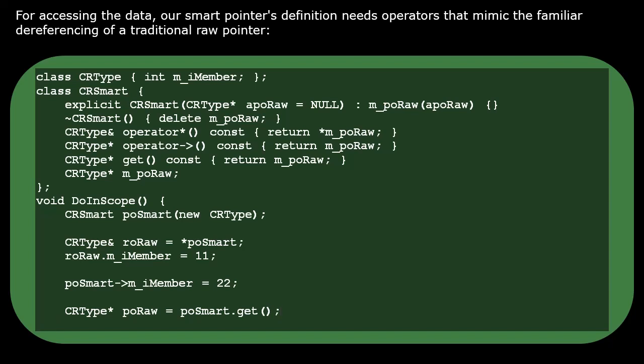Here we go. An application programmer doesn't need to write his own CRSmart class. Instead, C++ already contains several varieties of smart pointers that have been defined similar to this CRSmart.